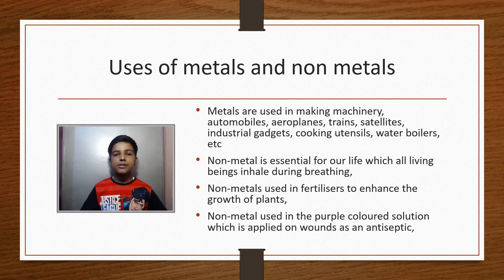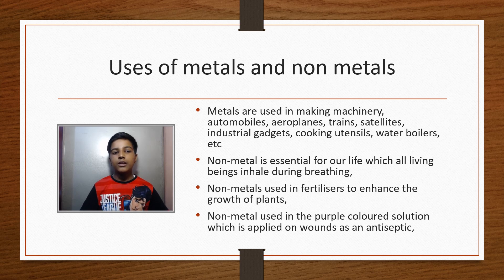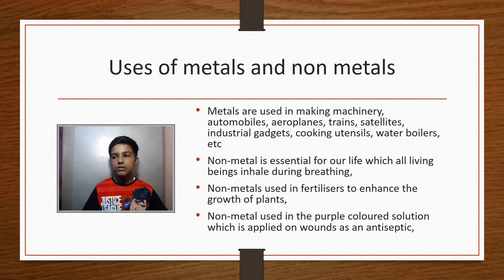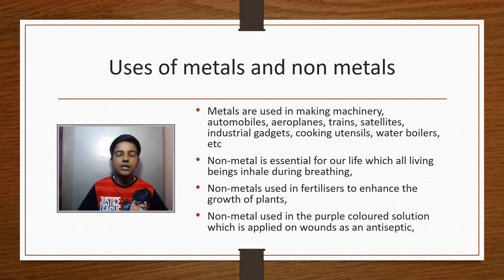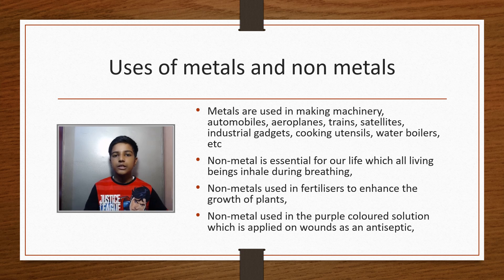That brings us to the end of chemical properties of metals and non-metals. Now let's discuss uses of metals. Metals are used in making almost everything: machinery, automobiles, aeroplanes, spacecraft, trains, satellites, industrial gadgets, cooking utensils, water boilers, bridges, and big pipes.